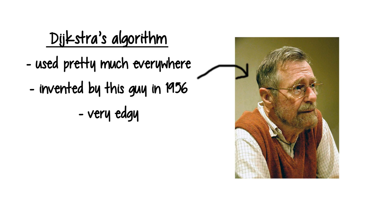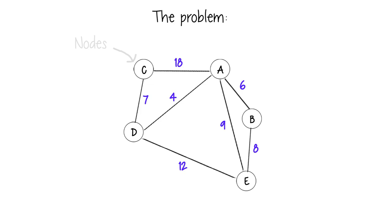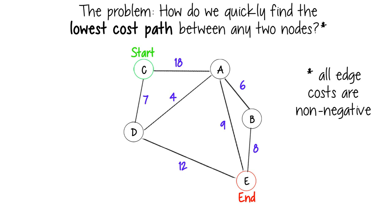The reason why Dijkstra's is so well regarded is that it solves a very common, very useful problem, which is this. Say you have a graph, a bunch of nodes with edges between them, how do we quickly find the lowest cost path between any two nodes? It turns out, with some creativity, answering a lot of bigger, more practical problems literally just comes down to solving this.